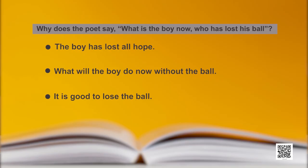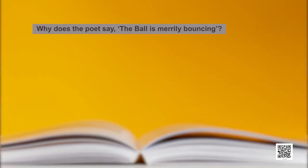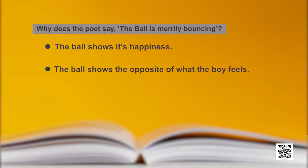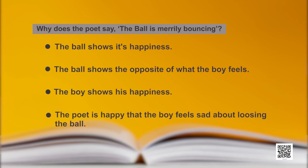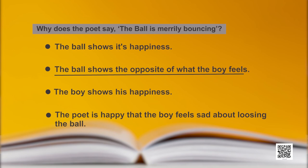Question two: Why does the poet say the ball is 'merrily bouncing'? Options: A — the ball shows its happiness; B — the ball shows the opposite of what the boy feels; C — the boy shows his happiness. Option B: the ball shows the opposite of what the boy feels. The ball is bouncing, but it will not express any feeling because it is not a living thing, but the poet symbolically tells something — the boy is sad, the ball is bouncing, and the bouncing is actually happiness.